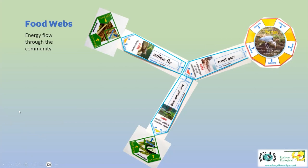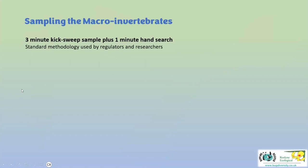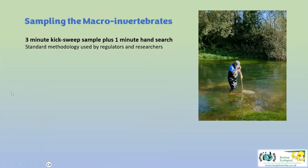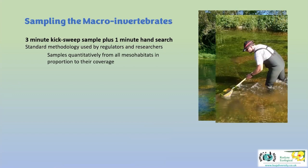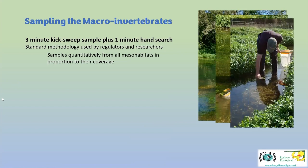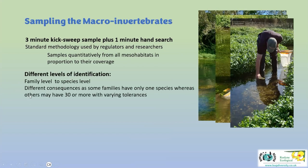We can use invertebrates to help tell us what's wrong with the river. We use a three-minute kick-sweep sample plus a one-minute hand search - the same method used throughout water research and monitoring - collecting from all mesohabitats in proportion to their coverage: gravels, weed, margins. We take photographs of the substrate for reference on subsequent visits. To identify invertebrates beyond family level you have to preserve them and identify under a microscope. Working only to family level loses a lot of definition since some families have only one species while others may have 30 or more, with very different pollution tolerances.